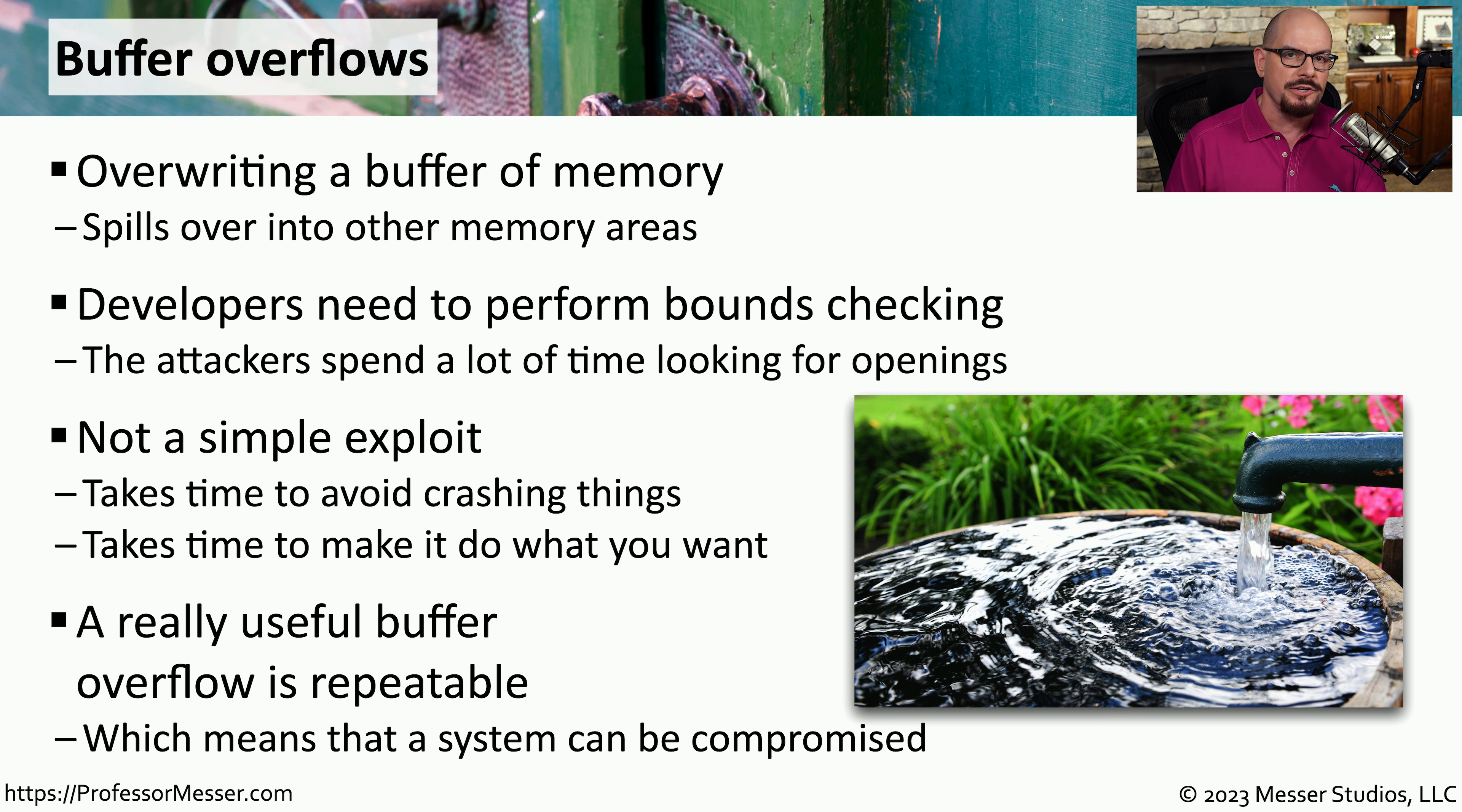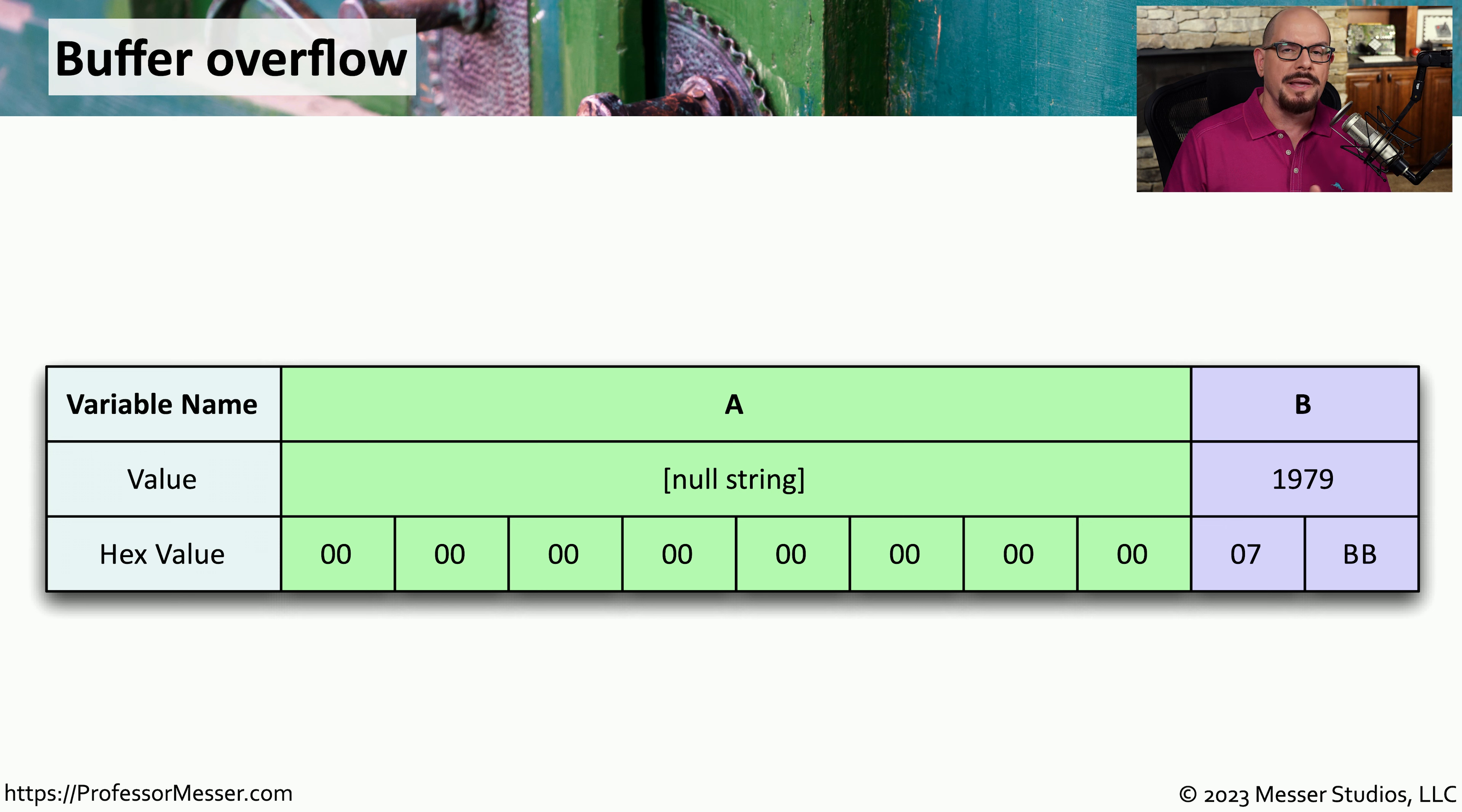Here's a buffer overflow example where the attacker can take advantage of this issue to be able to create elevated rights and permissions for the attacker. This is a case where we have two different variables in memory, variable A and variable B.